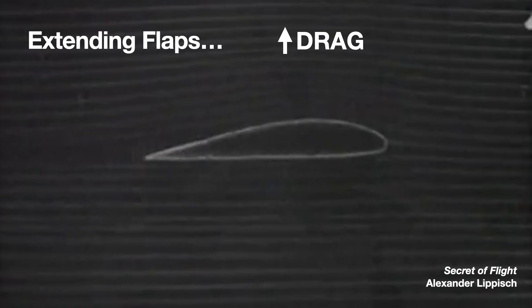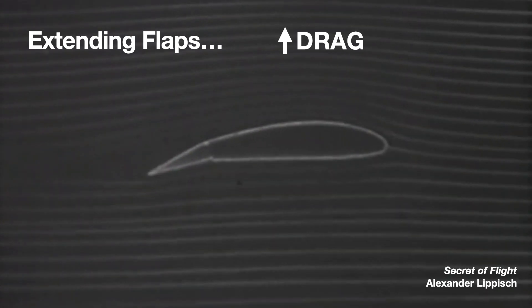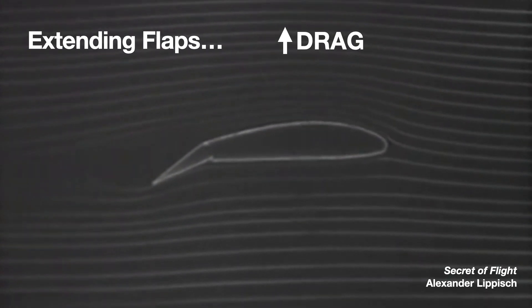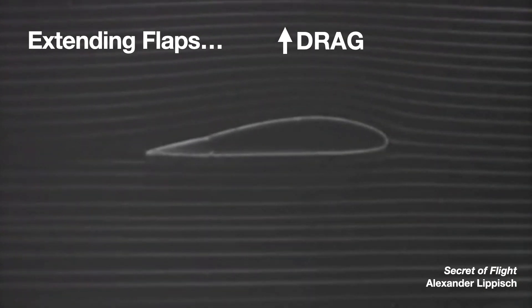Extending flaps also creates more drag. Given that an aileron is nothing more than a flap, we know that the drag created by that downwardly deflected aileron creates adverse yaw, for which rudder application is required to maintain coordinated flight. In this smoke tunnel video, you'll see that extending the flaps results in detached flow, and the energy needed to create that is a form of drag.